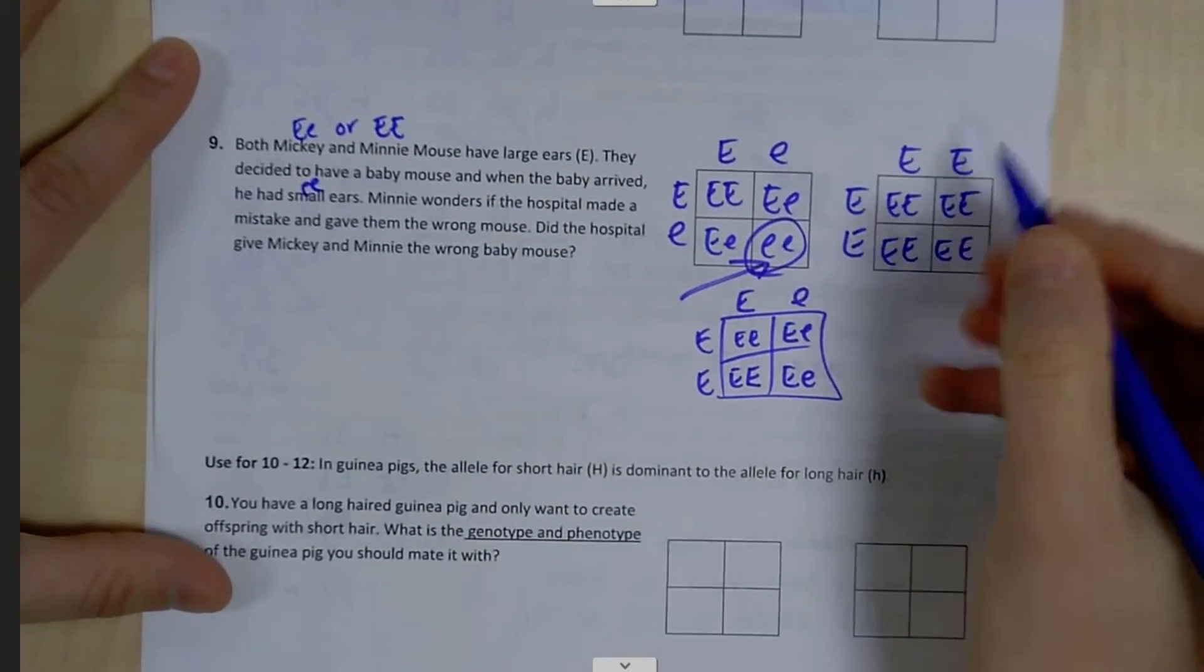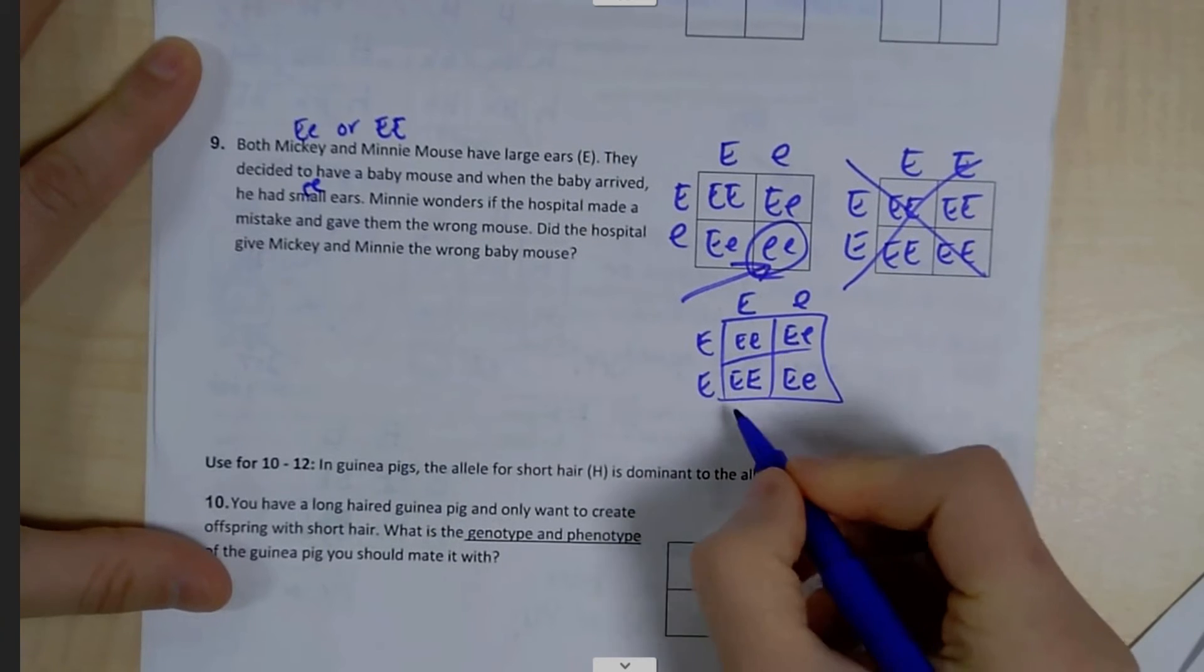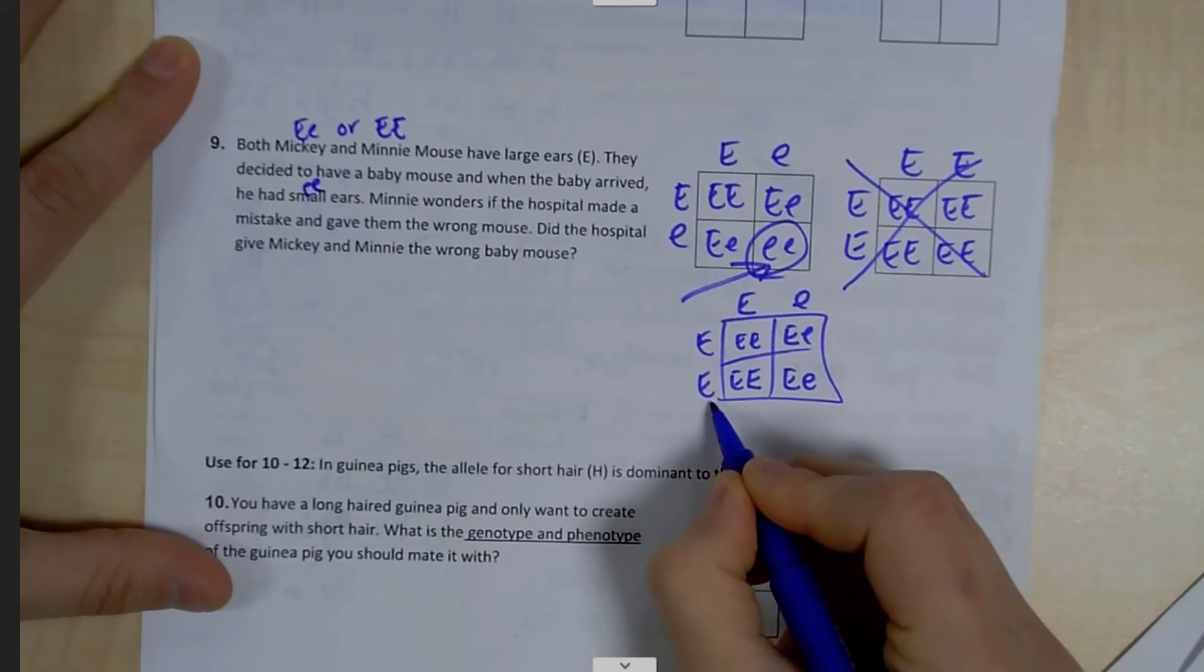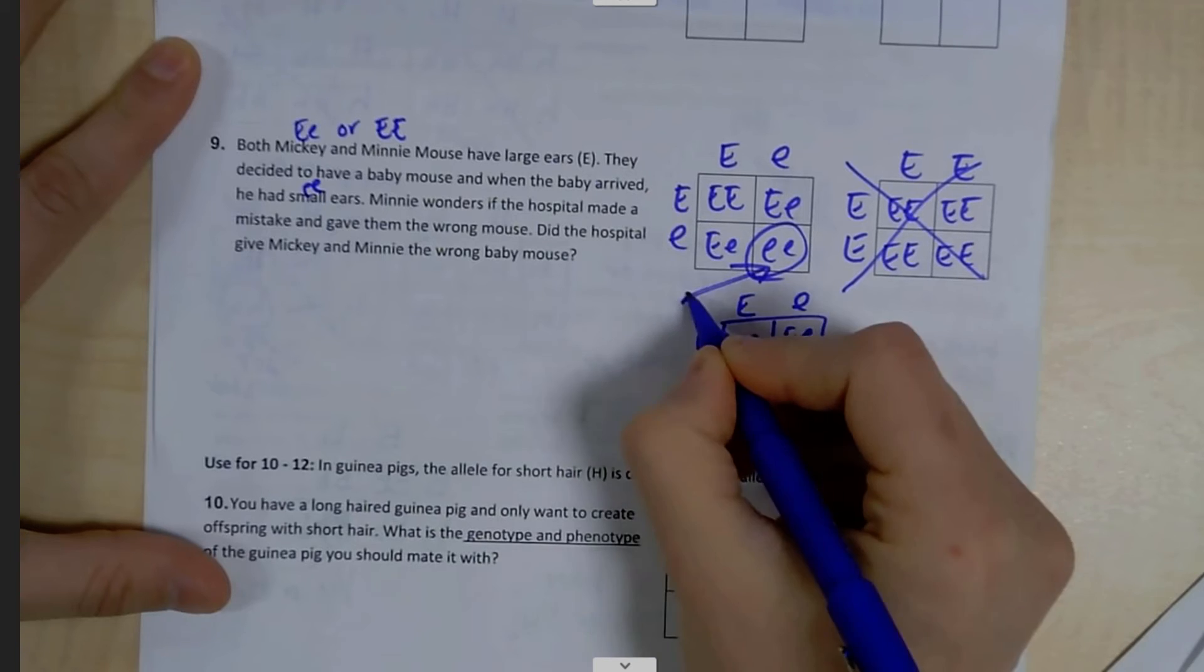But if we have homozygous dominant, all of them are homozygous dominant. If we have heterozygous and homozygous dominant, that dominant allele is going to show through.